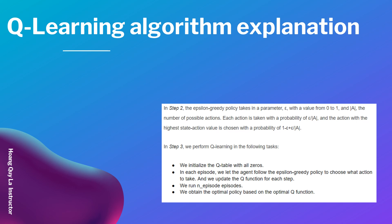And A, the number of possible actions. Each action is taken with a probability of epsilon divided by A. And the action with the highest state-action value is chosen with a probability of 1 minus epsilon plus epsilon divided by A.